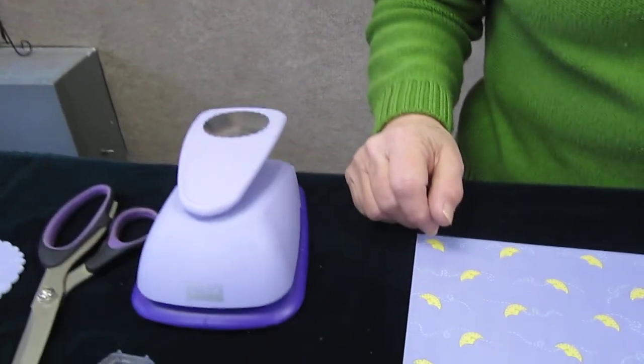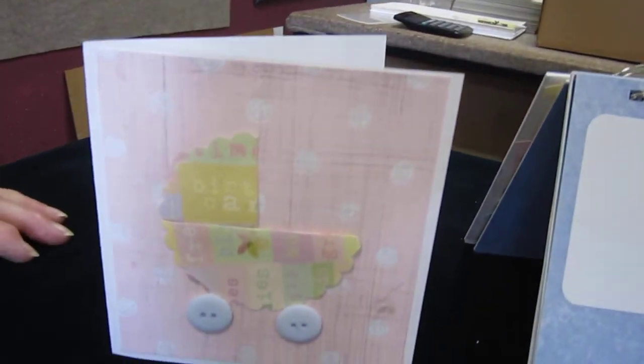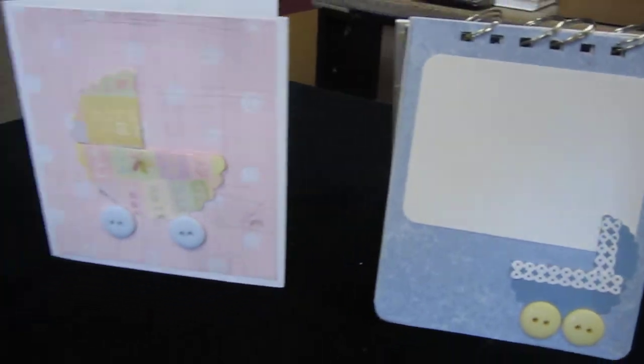So this morning we are going to be using a three-inch scallop punch to create a little baby carriage to use on a baby card. So the first thing we have to do is punch out two circles.